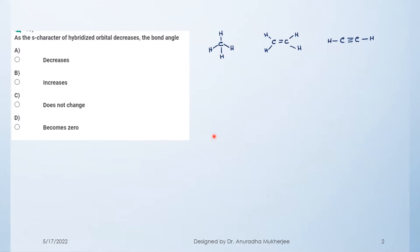Let's explain the problem based on an example — methane, ethylene, and acetylene. In methane, carbon is sp3 hybridized; in ethylene, carbon is sp2 hybridized; and in acetylene, carbon is sp hybridized. When carbon is sp3 hybridized, the bond angle is 109 degrees.